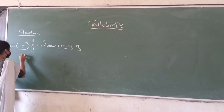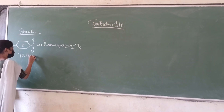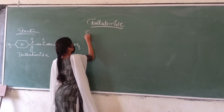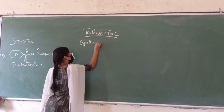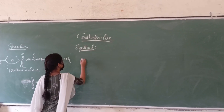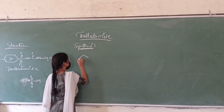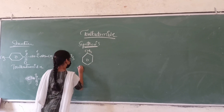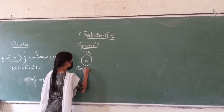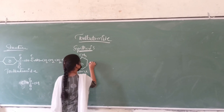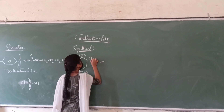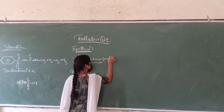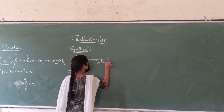Now let us see the synthesis. This is the structure of Tolbutamide. To prepare this drug, first we have to take toluene. This toluene is treated with chlorosulfonic acid.